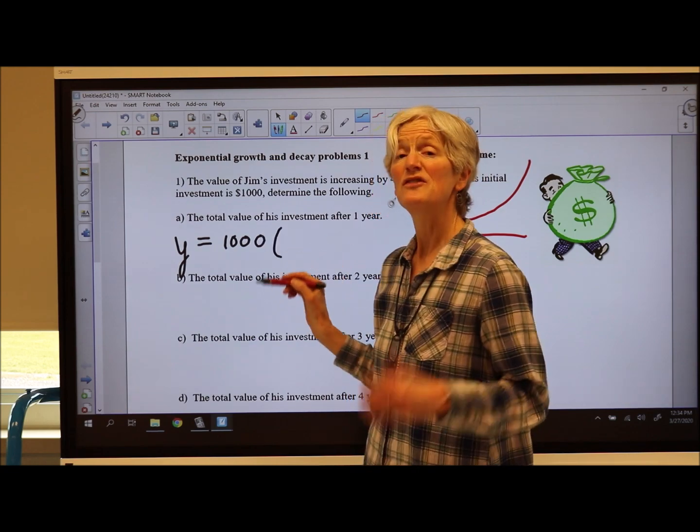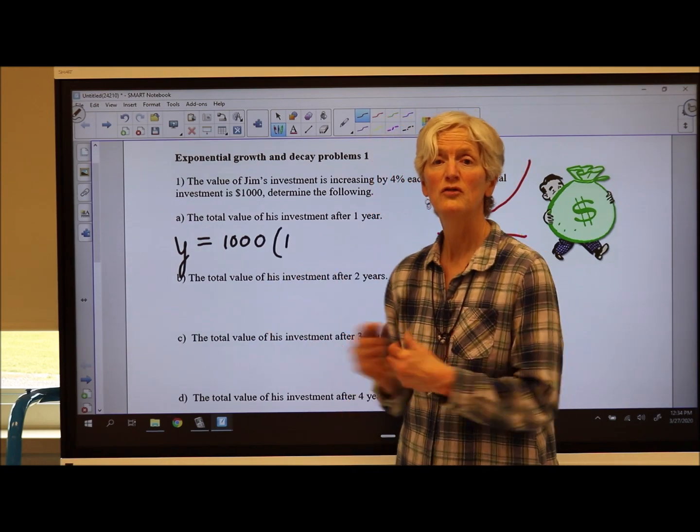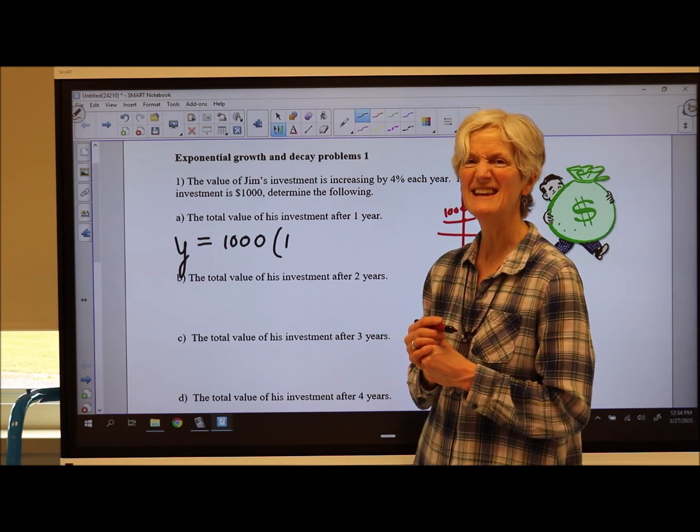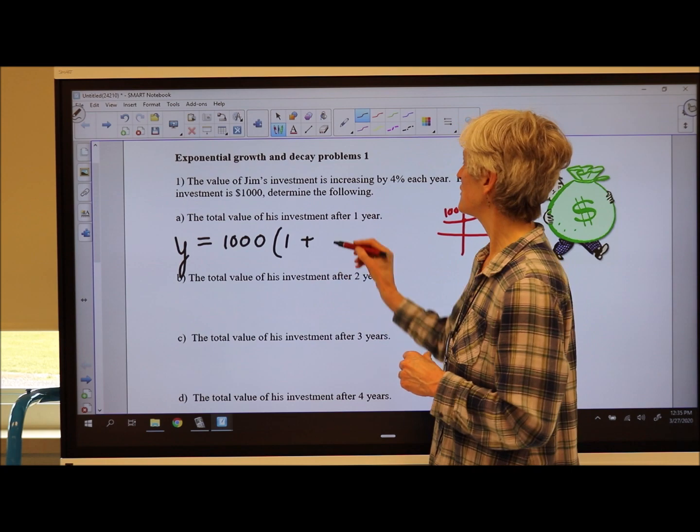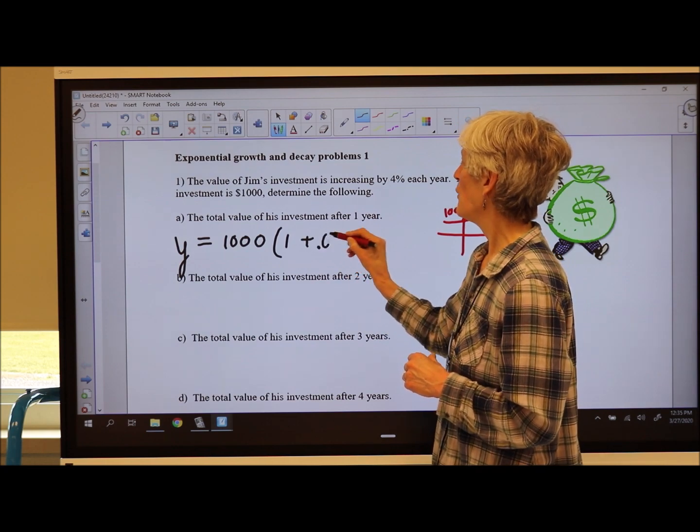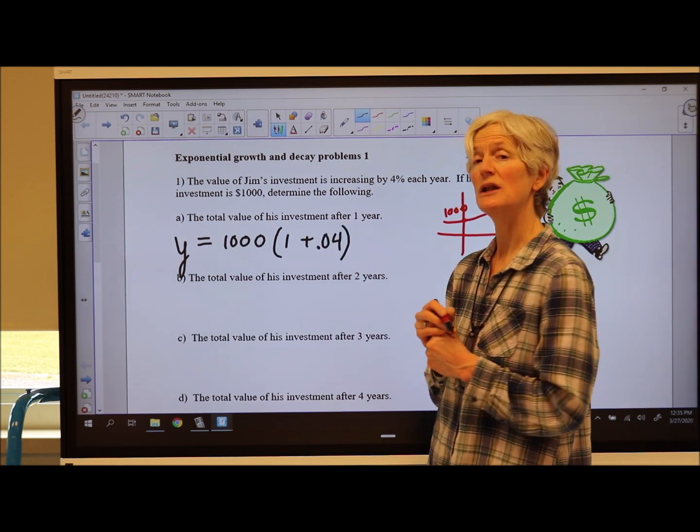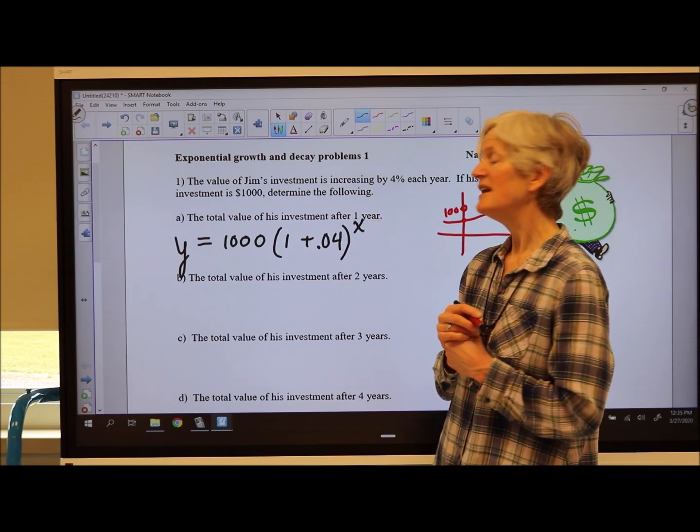He's going to start with his 100%, which is the same as 1 in decimal land, and then I'm going to add 4%, which is 0.04 in decimal land. I'm going to do that each year.